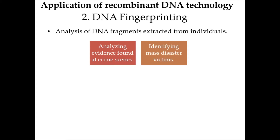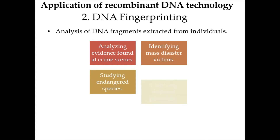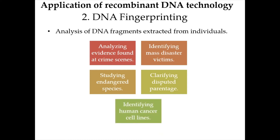For example, during the 9/11 attack, almost 3,000 victims were identified using DNA fingerprinting by comparing DNA obtained from their personal items and samples of the victims' remains. Other applications include studying endangered species, clarifying disputed parentage, and identifying human cancer cell lines.